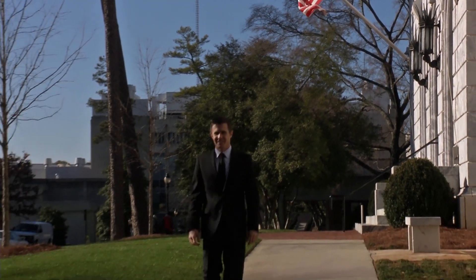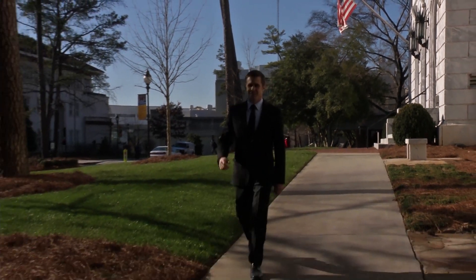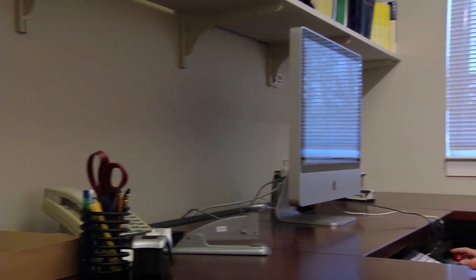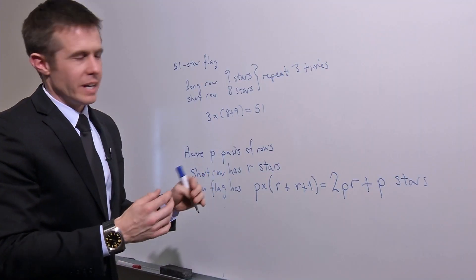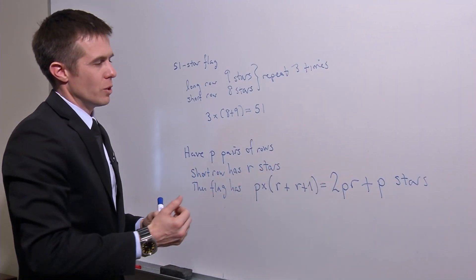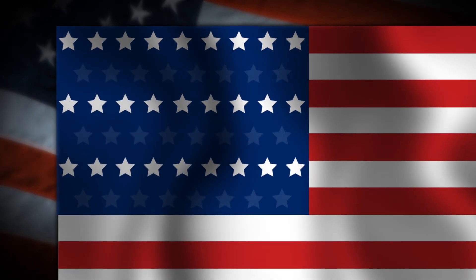Mathematician Skip Garibaldi says some simple mathematics could solve the problem. He designed a computer program to figure out all the possible combinations for a 51-star flag. He studied different patterns used throughout American history and arrived at what he calls an alternating pattern. It looks like this, and that makes a 51-star flag. It's very symmetric — fifty-one stars can be arranged into six alternating rows of nine and eight. The flag would alternate rows of an odd number of stars with rows of an even number of stars.